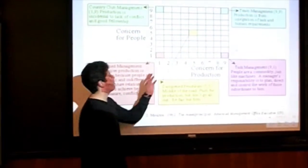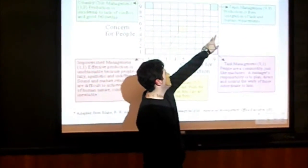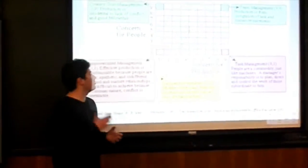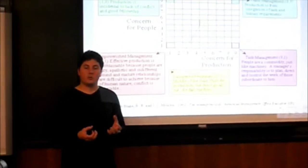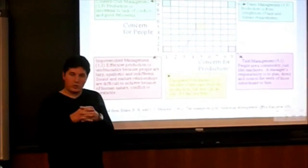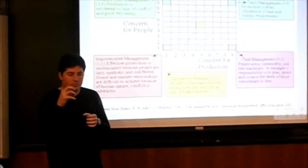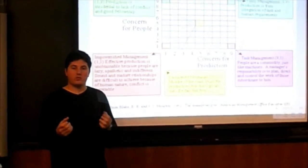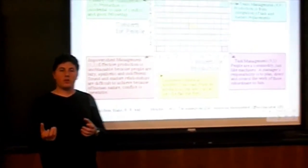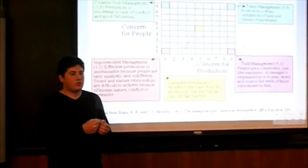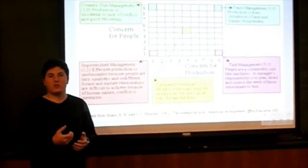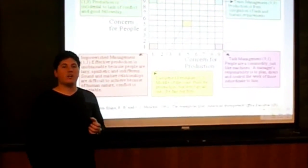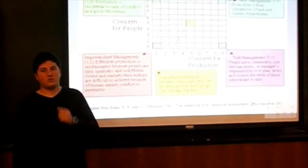In my opinion, the best and most productive model is team management nine to nine, where both the concern for production and the concern for the people are in joint agreement between the bosses of the company and the employees. The bosses motivate the employees by giving them prizes or dinners or promotions. And as a result, they create an environment which is as productive as possible.